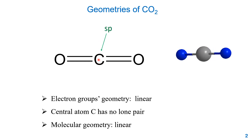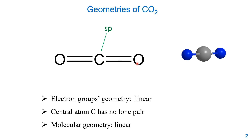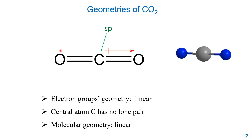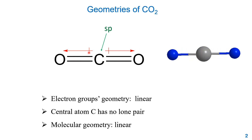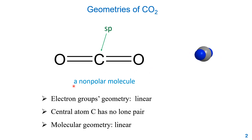Carbon in CO₂ is sp hybrid because it has two electron groups. The carbon-oxygen bond is polar: oxygen's electronegativity is 3.5 and carbon's is 2.5, a difference of 1.0, which is greater than 0.4, making it a polar covalent bond. We use dipole moment arrows pointing toward the more electronegative atom. In CO₂ the two dipole moments are exactly opposite and cancel each other, so carbon dioxide is a nonpolar molecule — a nonpolar molecule with polar bonds.